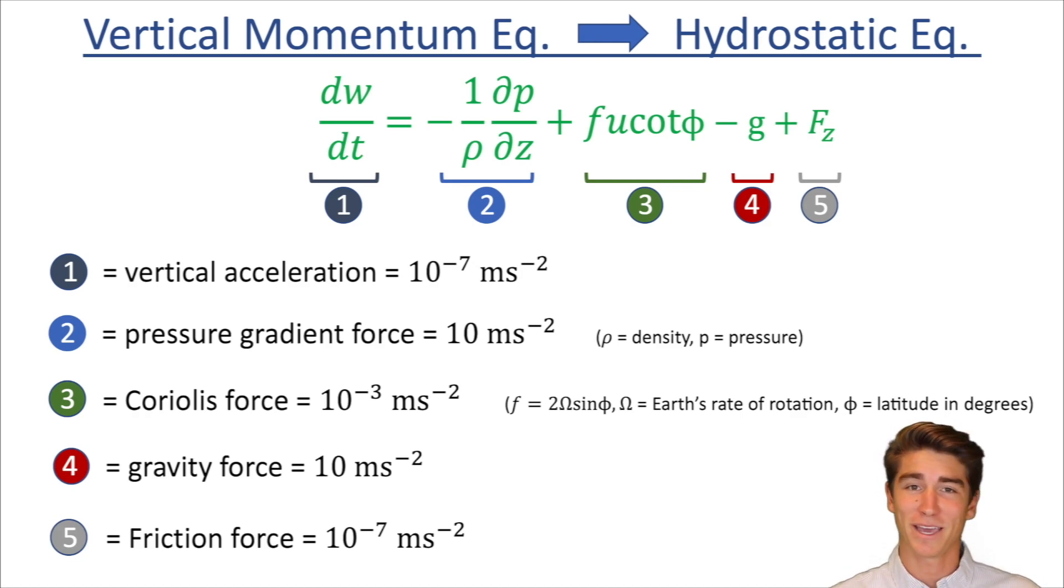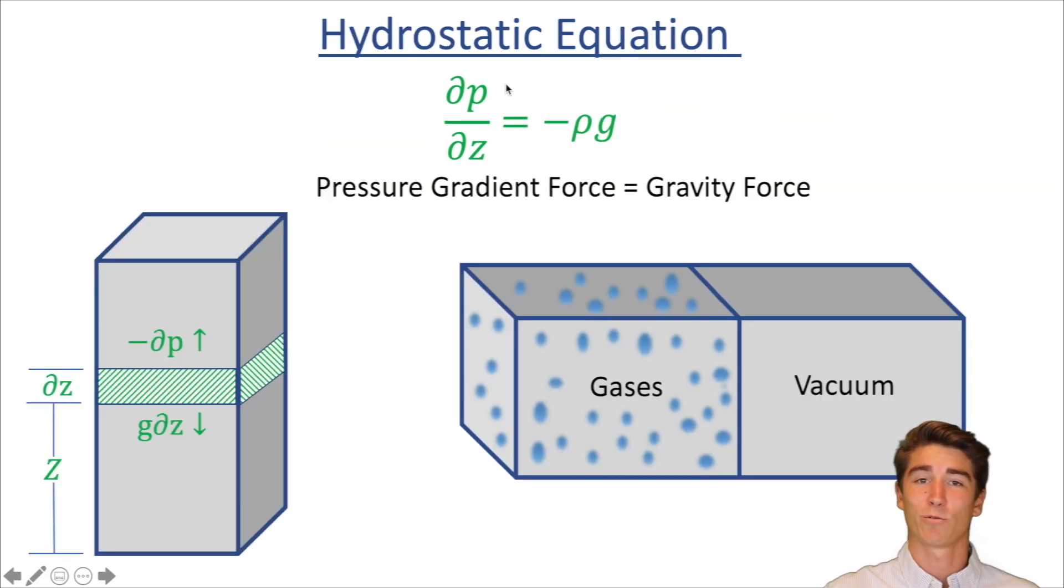And the reason they do this is to basically make these equations easier. Remember a lot of these equations were worked out before computers. So in order to be able to actually do the math they had to simplify it as much as possible before really diving into an actual forecast. So what we're going to do is we're going to take all those small terms and just cross them out. This is going to leave us with just the pressure gradient force and the gravity force. We're going to take that rho over to the right side and we're going to end up with the hydrostatic equation. Here you see it's dp dz equals negative rho g. Or in simpler words pressure gradient force equals the gravity force.